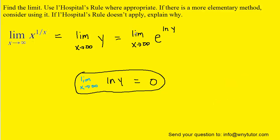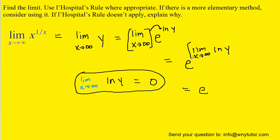This is advantageous because the limit laws allow us to transfer the limit up to the exponent, rewriting it as e raised to the limit as x approaches infinity of ln(y). We recall that the limit as x approaches infinity of ln(y) was equal to 0, as we proved earlier. So we replace that limit with 0, giving us e to the 0. And of course any quantity raised to the power of 0 equals 1, so this is the correct answer to the limit.